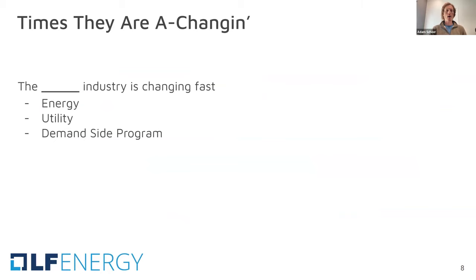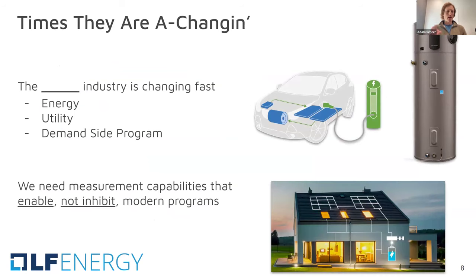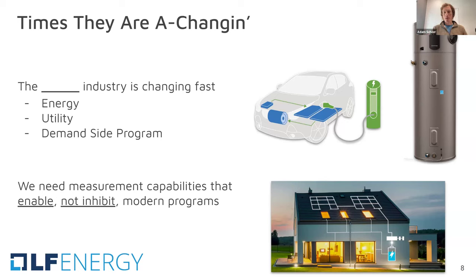The energy, utility, and demand-side program industries are all changing fast. You see examples everywhere: electric vehicles, electric space heating and water heating, solar plus storage. There are all sorts of new technologies being brought to bear on grid reliability and climate change. The biggest single change I've observed is that the electric grid itself is becoming the hub for decarbonization — not just electric power plant decarbonization, but also transportation and building decarbonization. We need methods that are able to capture those effects accurately.